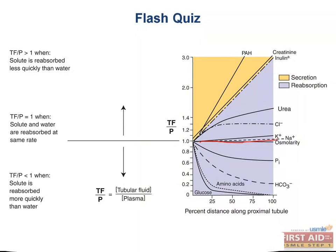Don't get confused by thinking a TF to P ratio higher than 1 means secretion and lower than 1 means reabsorption — this is wrong. In order to be secreted, a substance must have a TF to P ratio higher than inulin. If it's lower than inulin, there will be reabsorption. The key is always looking at the TF to P ratio relative to inulin.